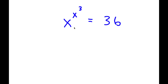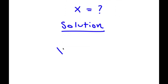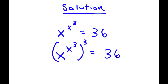In this problem, I have x to the power of x to the power of 3 is equal to 36. I want to find the value of x. For my solution, I'm going to start with x to the power of x to the power of 3 is equal to 36. What I'm going to do is take the power of 3 on both sides. So now I have x to the power of x to the power of 3, to the power of 3, is equal to 36 to the power of 3.